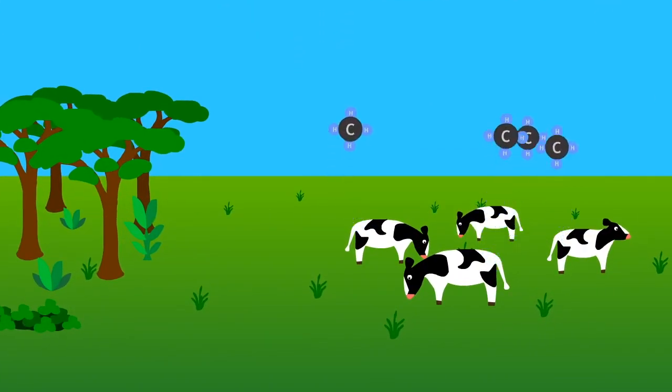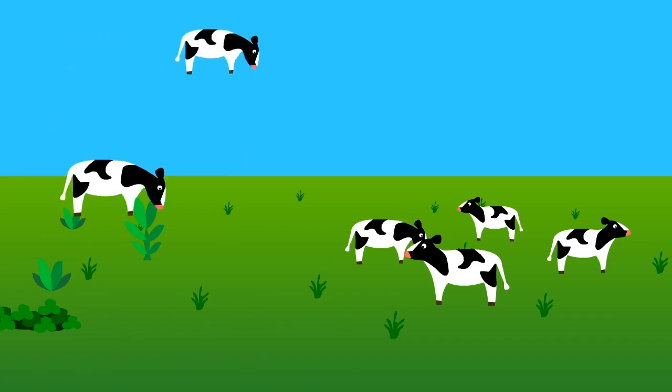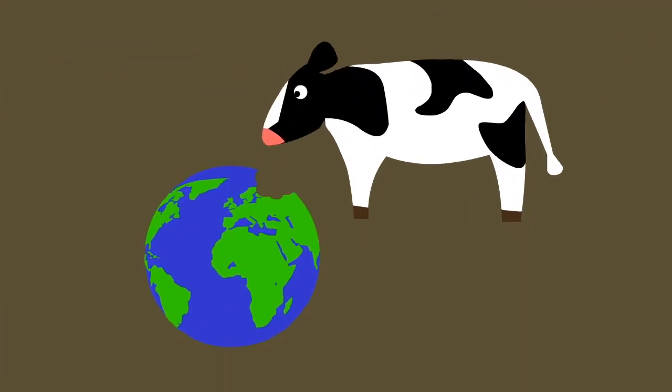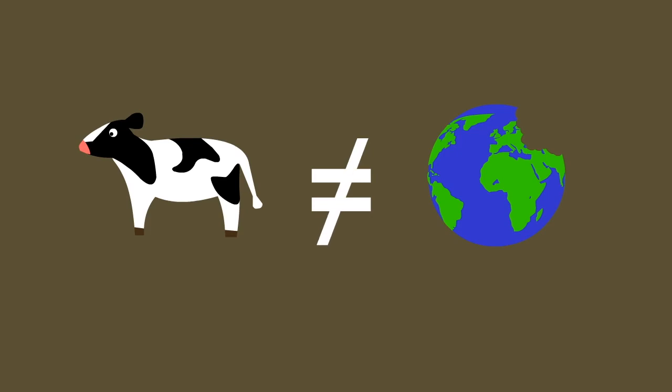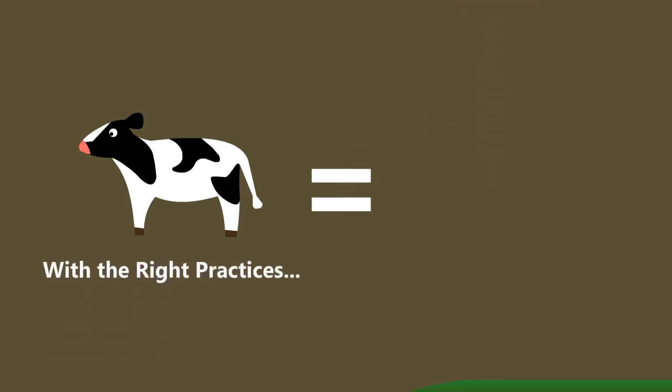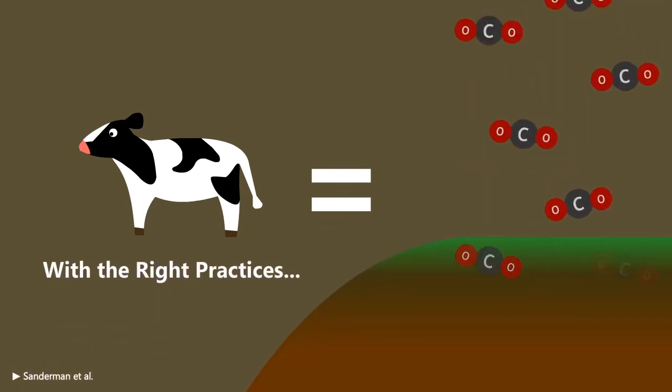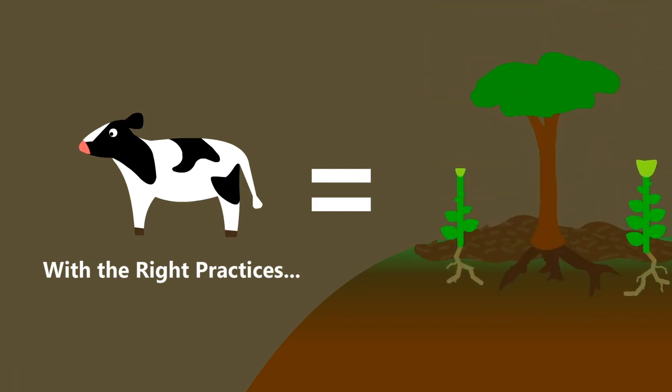From the release of methane to clearing forests for pasture land, cattle raising is known for being very environmentally destructive. But this is not inherent to grazing animals. If the right practices are put in place, enormous amounts of carbon can be sequestered into the ground, soil can be built, and even desertification can be reversed in a matter of years.